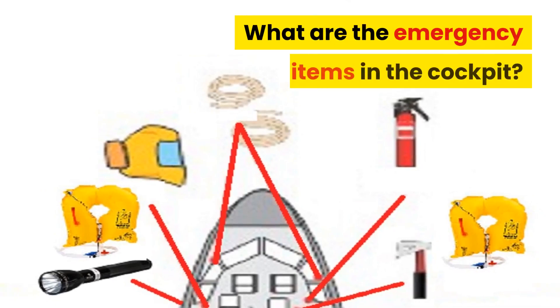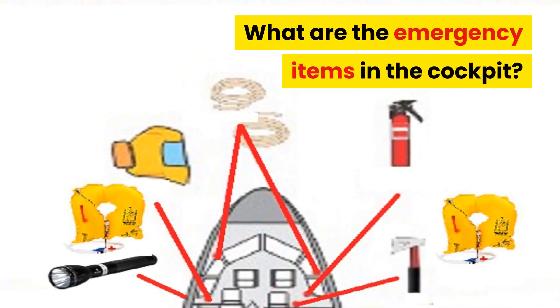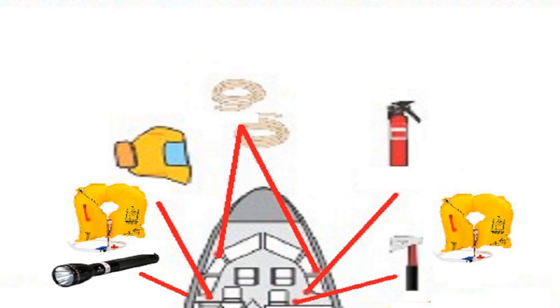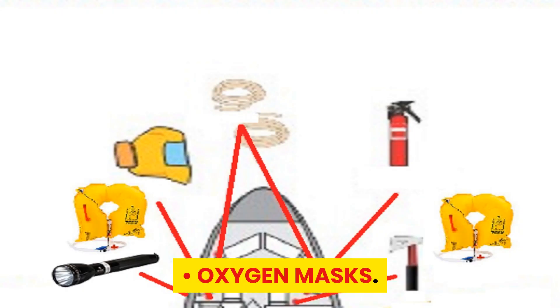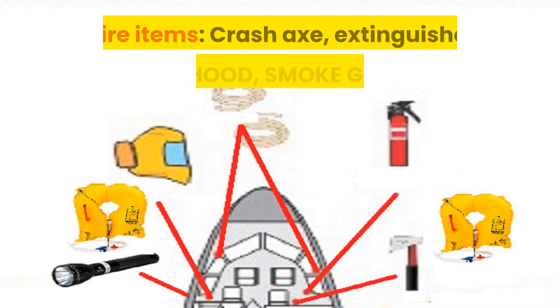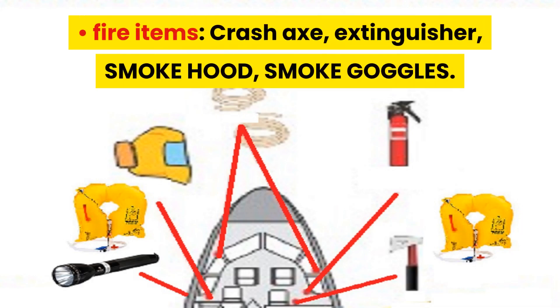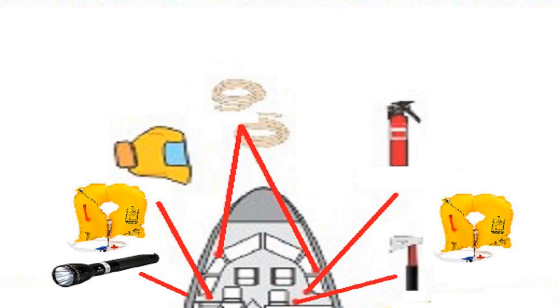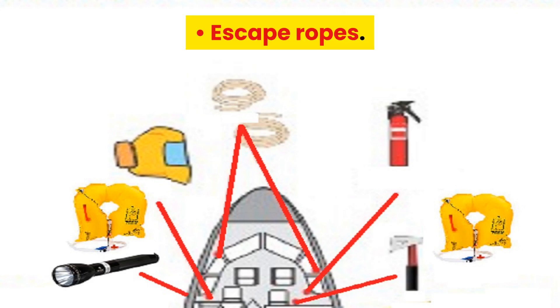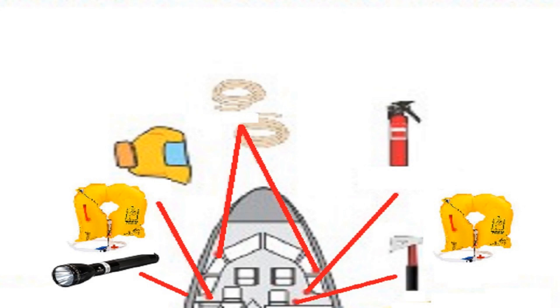Chapter 2: Cockpit Emergency Equipment. What are the emergency items in the cockpit? Flashlights, oxygen masks, fire items — crash axe, extinguisher, smoke hood, smoke goggles — escape ropes, and life jackets.